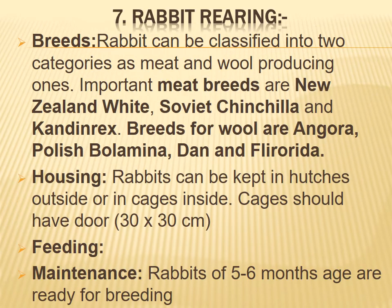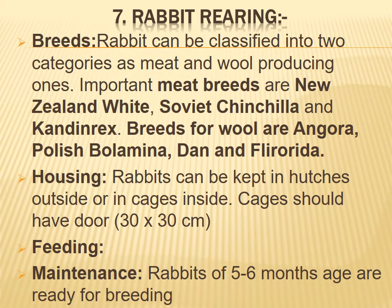Seventh, rabbit rearing. Rabbits can be classified into two categories: meat and wool producing. Important meat breeds are New Zealand White, Satin, Chinchilla, and Californian. Breeds for wool include Angora, Polish, Palomino, Daan, and Florida. For housing, rabbits can be kept in hutches outside or in cages inside. Cages should have a door of 30 by 30 centimeters.